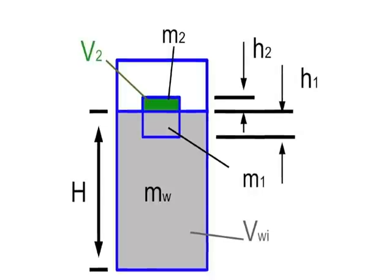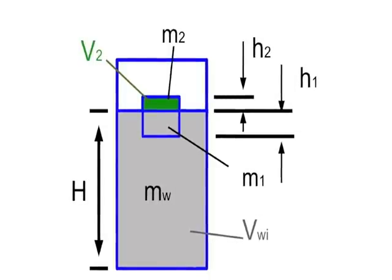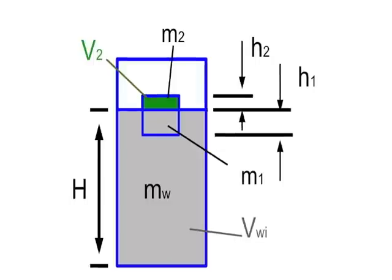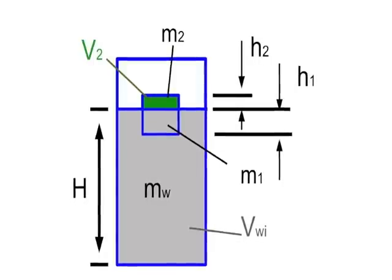The H represents the height of the water and the V2 represents the volume of the ice sticking out of the water while M2 represents that mass. H2 represents the height of the ice sticking out of the water and H1 represents the distance of the ice underneath the water while M1 represents that mass.